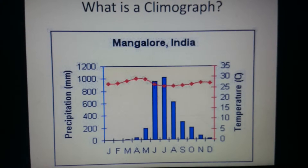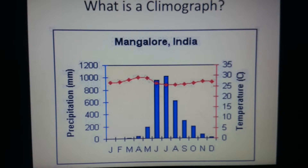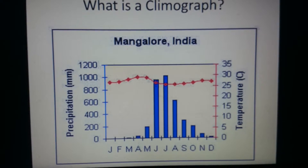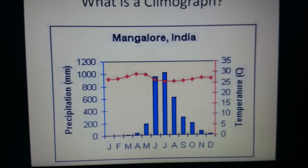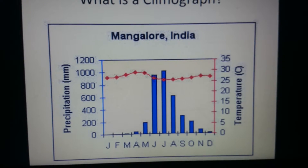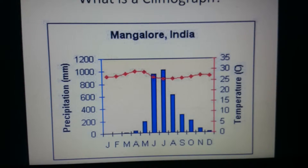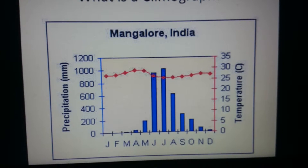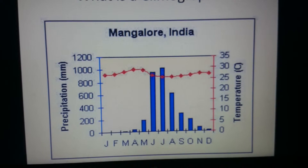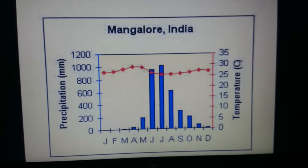What is a Climograph? A Climograph is basically a combination graph that is used in weather and climate studies. It is a line graph with either a bar graph or a histogram drawn on the same chart.